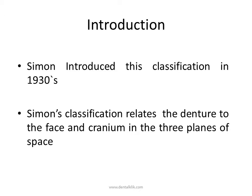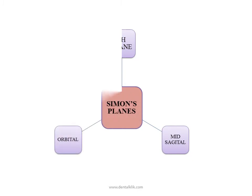Since the growth of the face and jaws occurs in three planes of space — that is, height, width, and depth — abnormalities can also occur in any one or more of these planes. Simon's classification relates the denture to the face and cranium in these three planes of space.